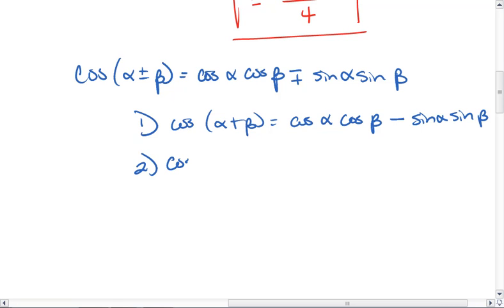And if we have cosine of one angle minus another, this equals cosine of the first angle, cosine of the second angle plus sine of the first angle times sine of the second angle. So here, our plus and minuses are flipped.